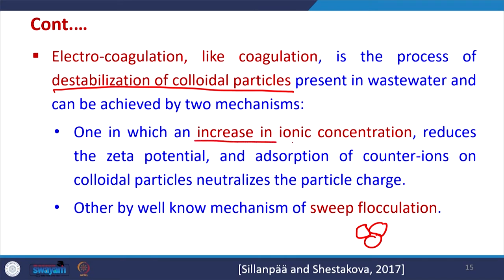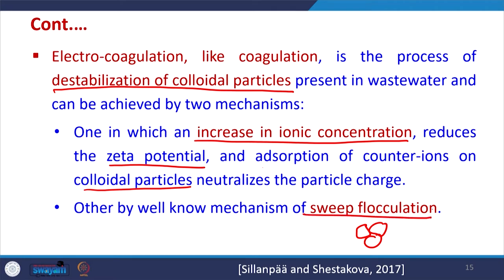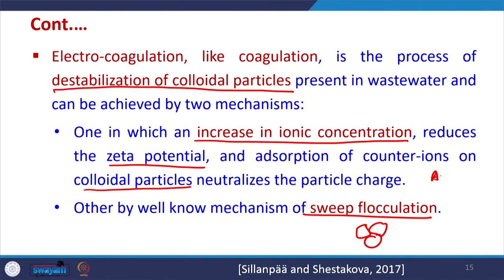One mechanism is that the increase in ionic concentration reduces the zeta potential, and adsorption of counter-ions on the colloidal particle neutralizes the particle charge. This happens because Fe2+ or Fe3+ is continuously generated depending on the type of electrode. Another well-known mechanism is sweep flocculation: at high pH with aluminium being generated, Al(OH)3 is formed. Because it has a bigger size, when it settles down, smaller organic compounds in its vicinity get trapped inside the floc — this is sweep coagulation or sweep flocculation.